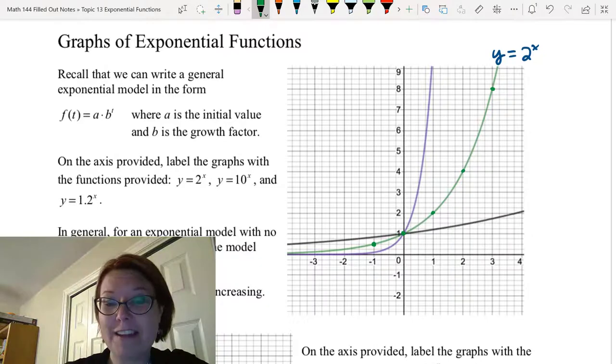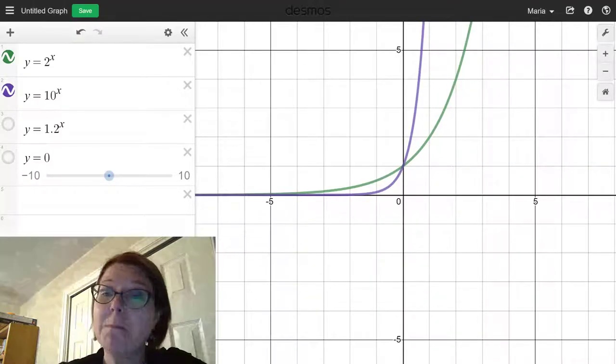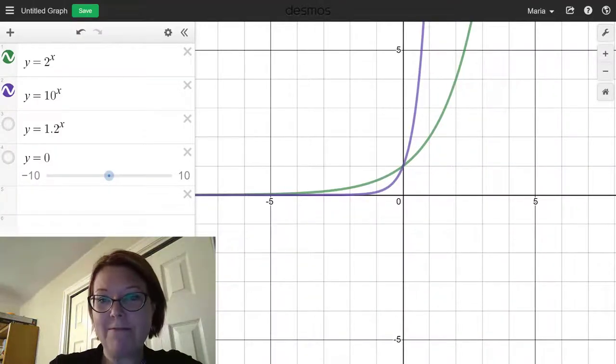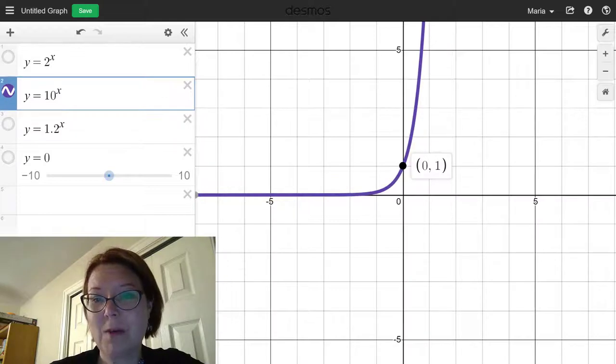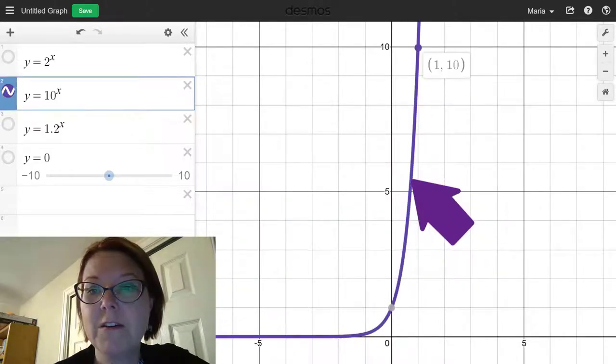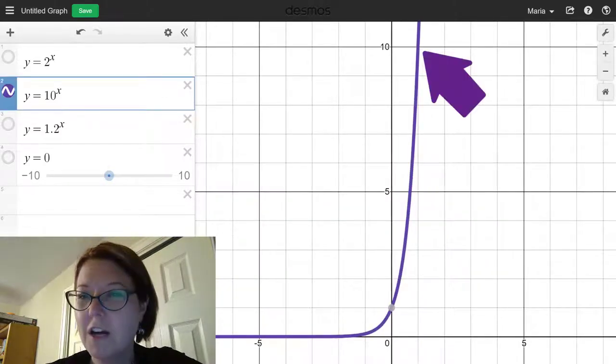Next let's look at y equals 10 to the x. This is a much steeper graph to the right of the y-axis than y equals 2 to the x. Again I have a point at 0 comma 1, but at an x value of 1 I have a point at 1 comma 10.